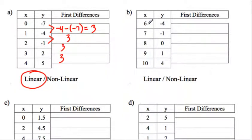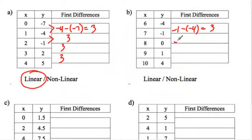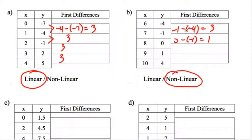Let's go to B. Double check the X column: 6, 7, 8, 9, 10 — all going up by the same number. Now let's check the first differences. Negative 1 subtract negative 4 — that's negative 1 plus 4 — that's 3. Then 0 subtract negative 1 — that's 1. I'm going to stop. Notice these aren't the same. The X column was going up by 1 every time — that's fine. But the first differences are not the same, so I know it's nonlinear. They have to go up by the same number every time to be linear.